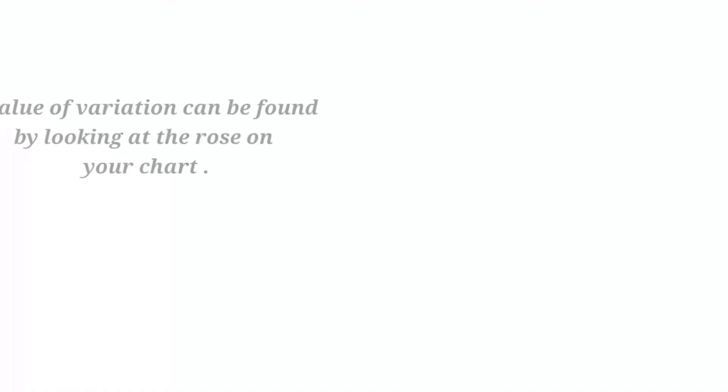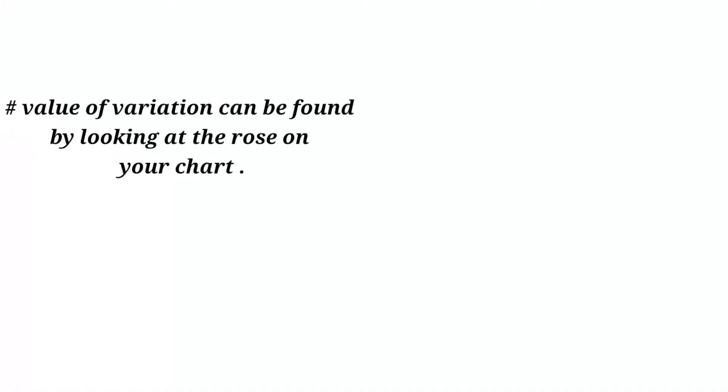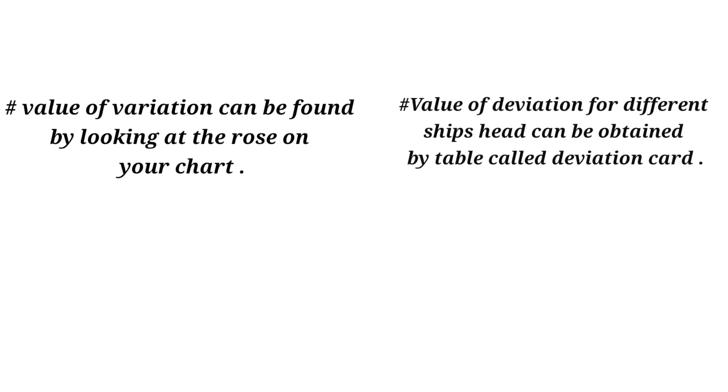The value of variation can be found by looking at the compass rose on your chart, whereas the value of deviation for different ship's head can be obtained by a table which is called deviation card.